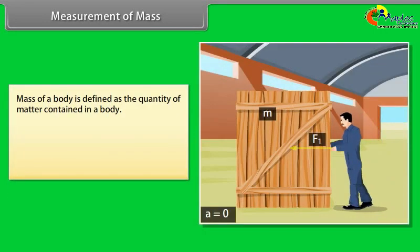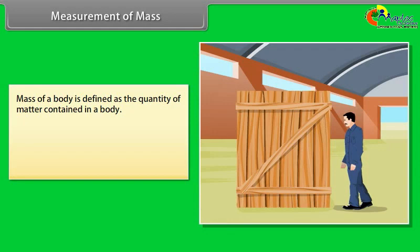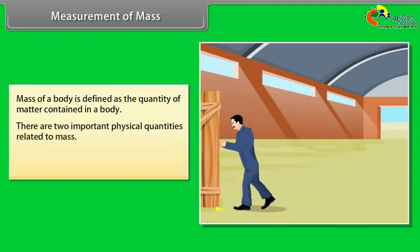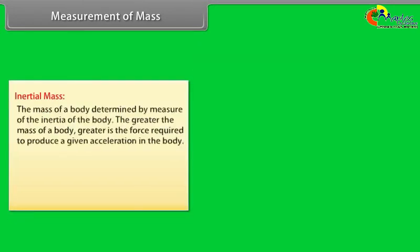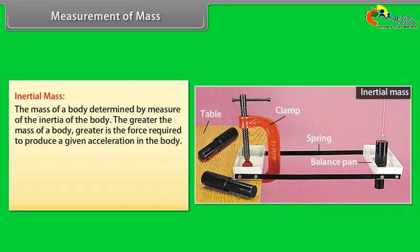Measurement of mass. Mass of a body is defined as the quantity of matter contained in a body. There are two important physical quantities related to mass of a body. These quantities are inertial mass and gravitational mass. Inertial mass: the mass of the body is determined by measure of the inertia of the body.